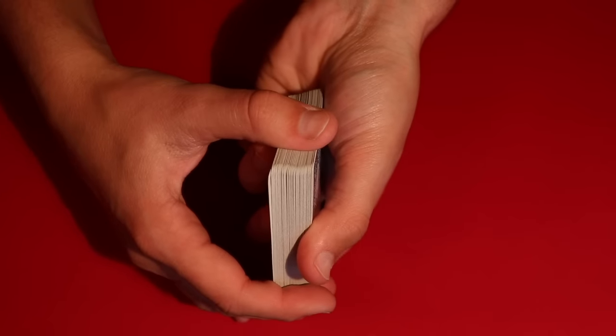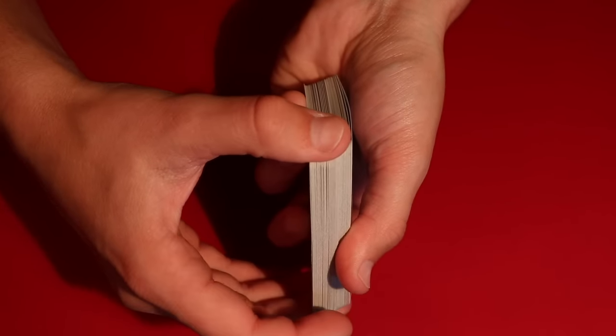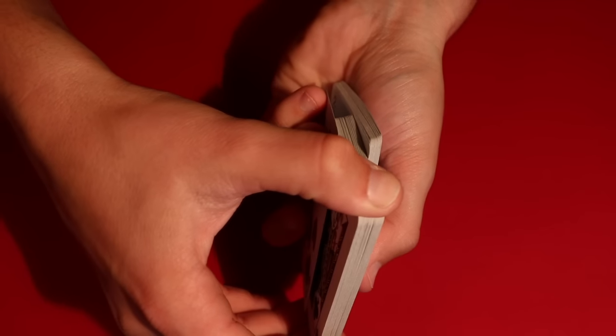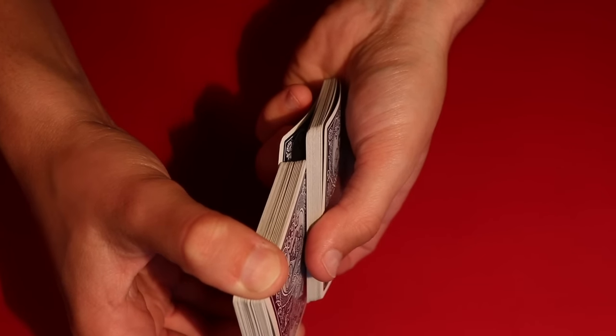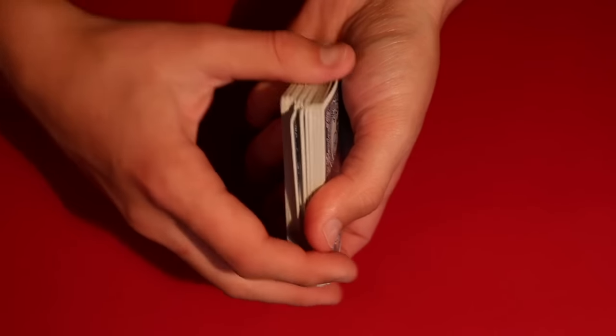The overhand shuffle looks like this. So you're doing a normal overhand shuffle except for you're holding on to the bottom card right there with your three fingers, and it's going to stay on the bottom, and you keep doing that about three or four times.